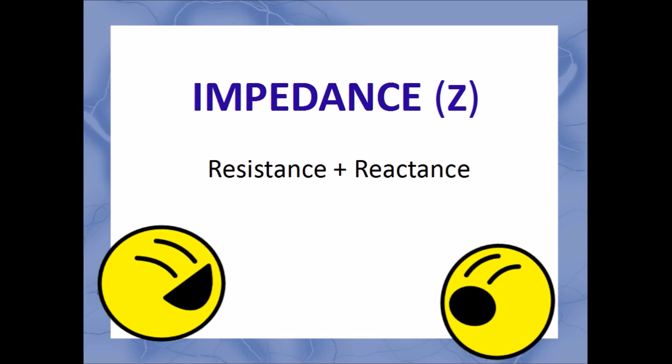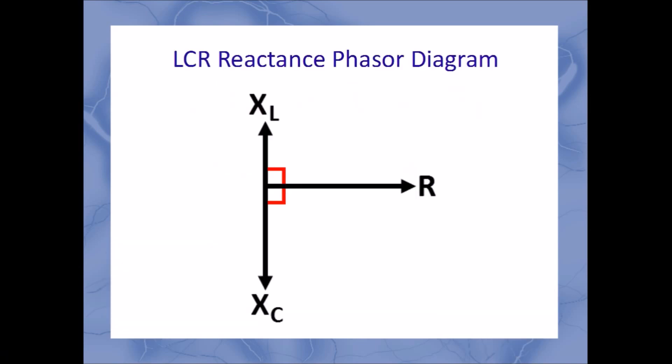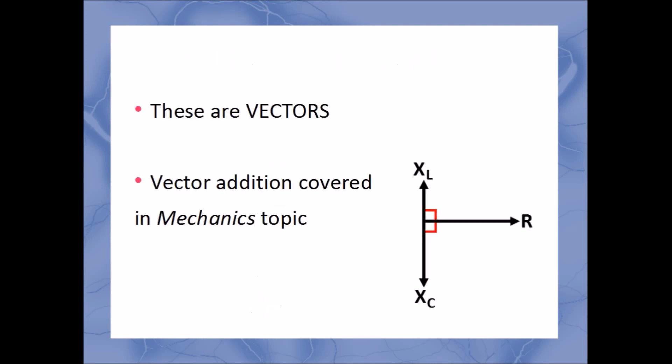Impedance is found by taking the resistance of the resistor and adding it to the reactances of the capacitor and the inductor. But it's not as simple as adding three numbers and pushing the equals button. This is the phaser diagram showing those three quantities. Notice, they all point in different directions and do not line up. In fact, each reactance phaser is at right angles to the resistance phaser. Therefore, we have to use vector addition to add them all up.